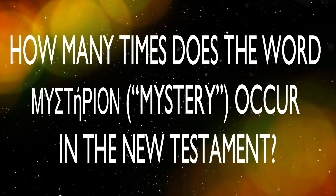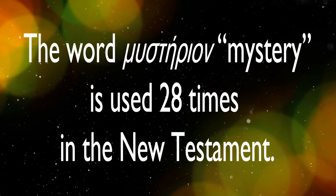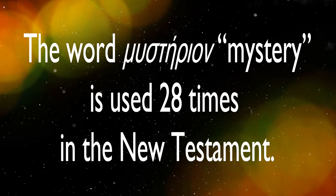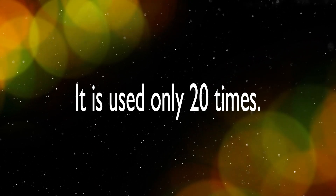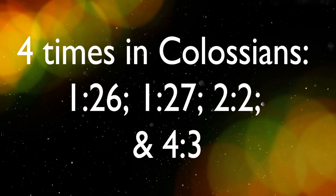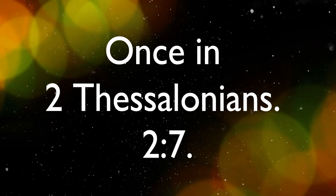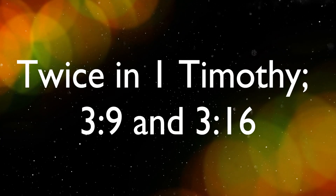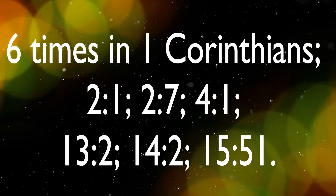How many times does the word Mysterion occur in the New Testament? The word Mysterion is used 28 times in the New Testament, and it is used only 20 times in the Pauline and Deuteropauline letters: six times in Ephesians, four times in Colossians, once in 2 Thessalonians, twice in 1 Timothy, twice in Romans, and six times in 1 Corinthians.